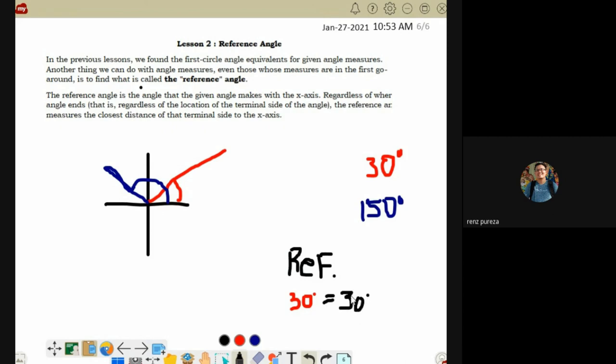These are the measurements of the two angles. Now, let's look at their reference angle. What is the reference angle of 30 degrees? The reference angle of 30 degrees is 30 degrees. Why? The definition of reference angle is the angle created from the x-axis as your initial side.